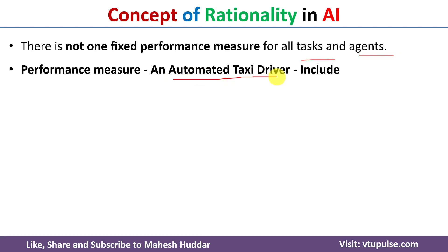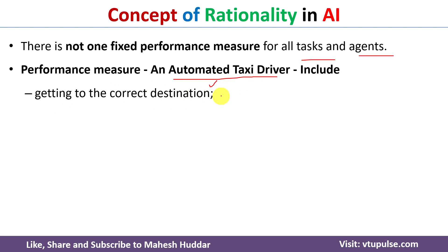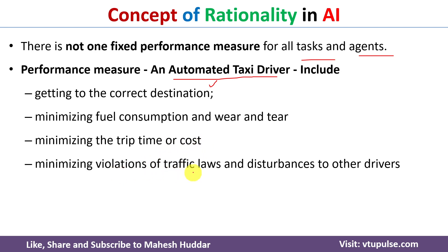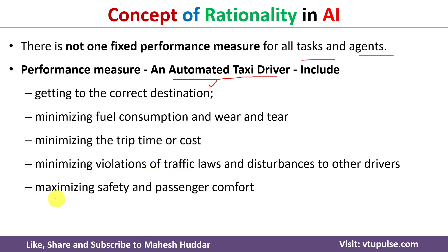We will take the example of an automated taxi driver to understand the performance measure and how rationality can be defined. The performance measures for an automated taxi driver include: getting to the correct destination; minimizing fuel consumption, wear and tear, trip cost, and trip time; minimizing violations of traffic laws and disturbance to other drivers; maximizing the safety of passengers and passenger comfort during the ride; and maximizing profit.